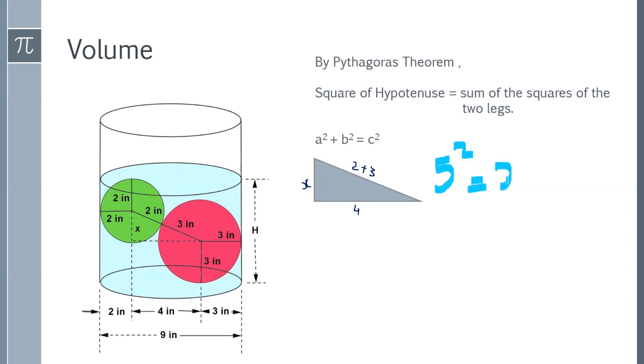Then the legs. One leg is x, the other one is 4 inch. So, this x square is this hypotenuse squared minus other leg squared. So, which is 9. So, x is 3.